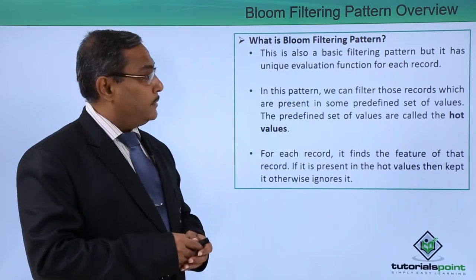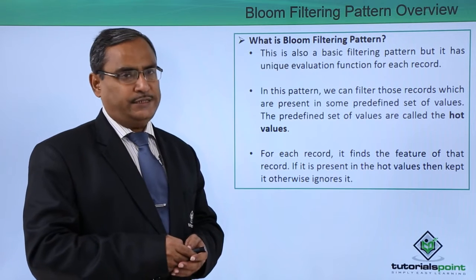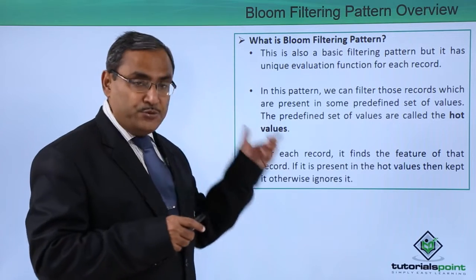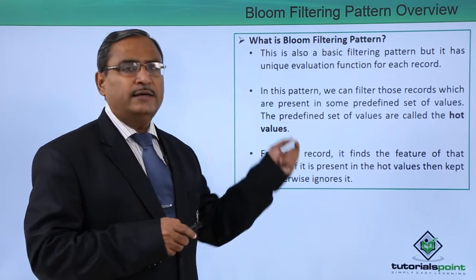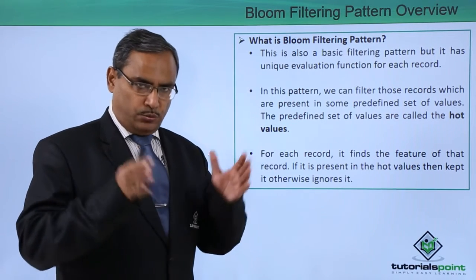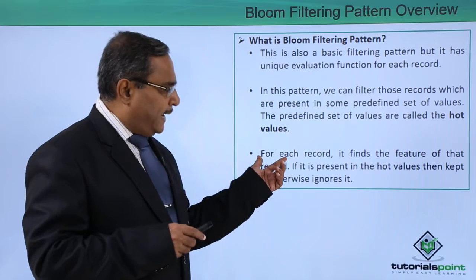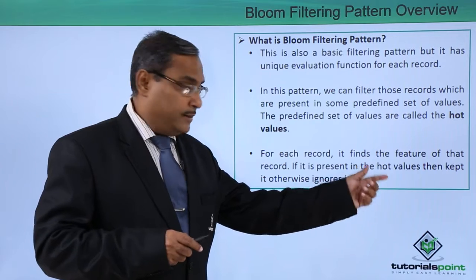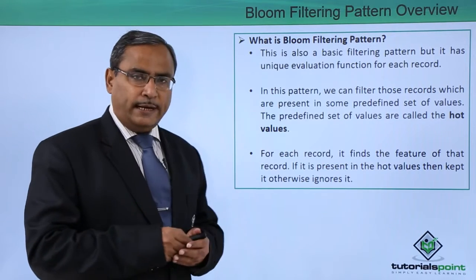Bloom filtering pattern is a basic filtering pattern, but it has a unique evaluation function for each record to extract the feature of each and every record. In this pattern, we can filter those records which are present in some predefined set of values, and these predefined values are known as hot values. For each record, it finds the feature of that record. If it is present in the hot value set, then the record will be kept; otherwise the record will be discarded and ignored. In this way, the filtering will take place.